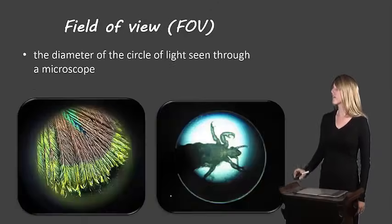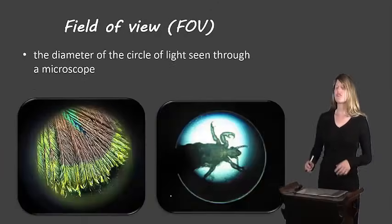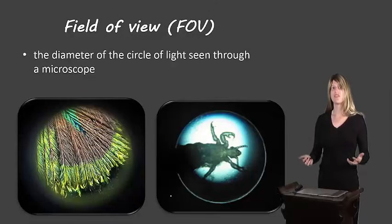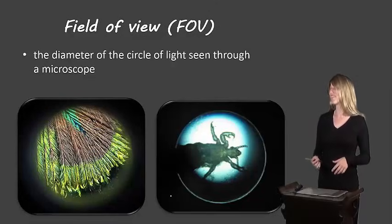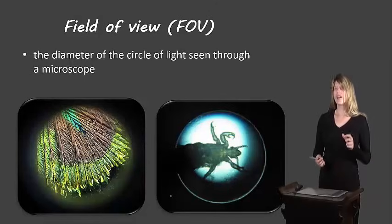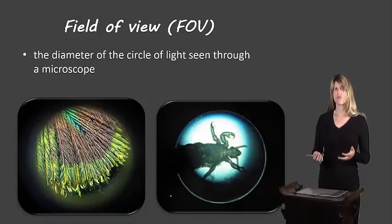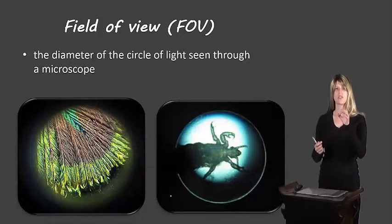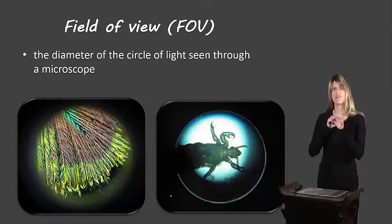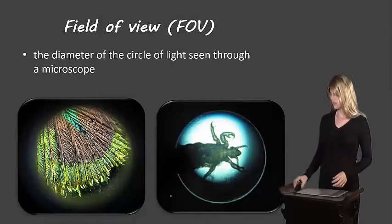Let's look at our next calculation. We need to understand what a field of view is before we can calculate it. The field of view is the diameter of the circle of light that we can see through a microscope — when we look through a microscope, we see a circle, and the diameter of that circle is our field of view.